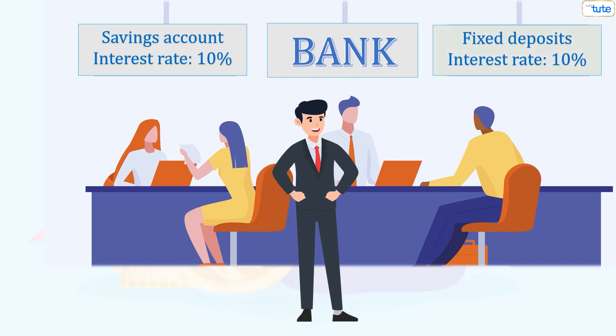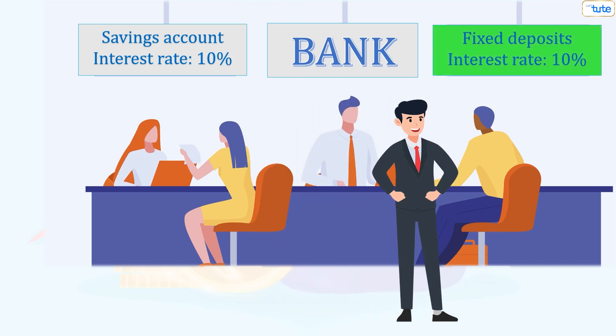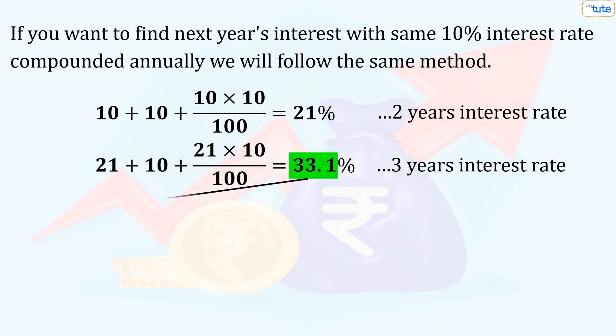So we can suggest John to invest his money in a fixed deposit. Now, if you want to find the next year's interest, we will follow the same method.